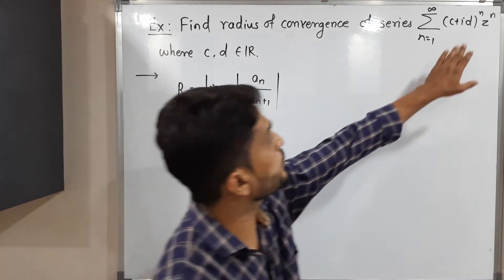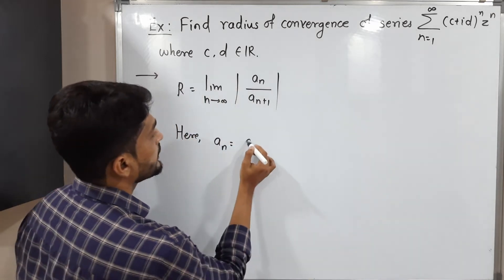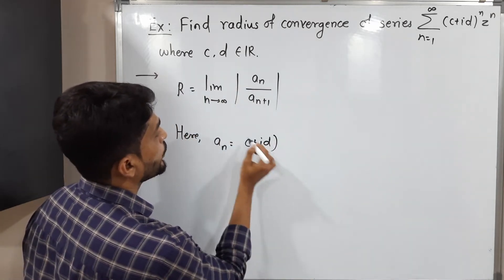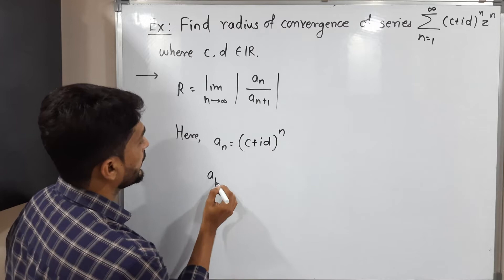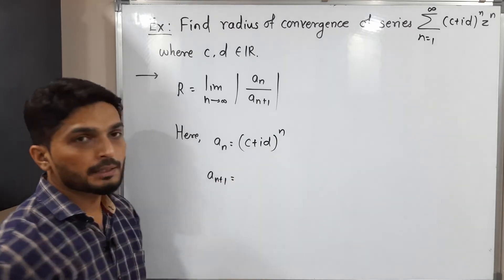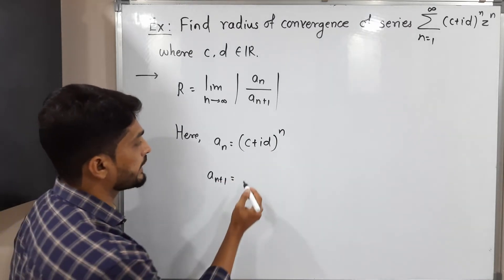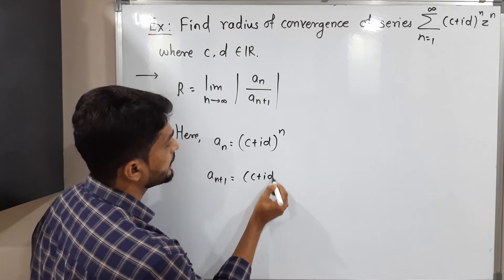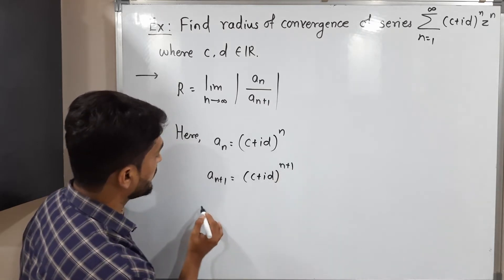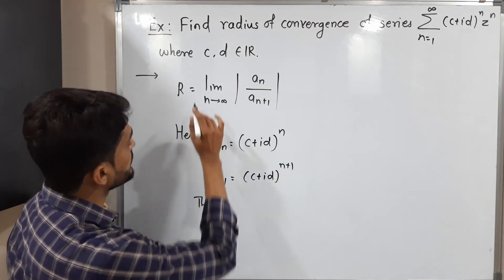The multiple of z raised to n is (c plus id) raised to n, (c plus id) whole raised to n. a_{n+1}, that means simply replace n by n plus 1 everywhere, so you will have (c plus id) raised to n plus 1. Then let us put these values in this formula.